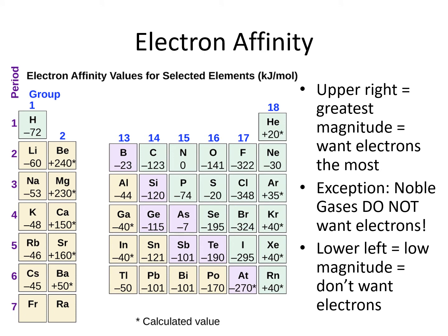In terms of magnitude, that is absolute value of the number, electron affinity generally follows the same trend as for ionization energy. The smallest values are at the lower left of the periodic table, and the largest values are at the upper right of the periodic table.